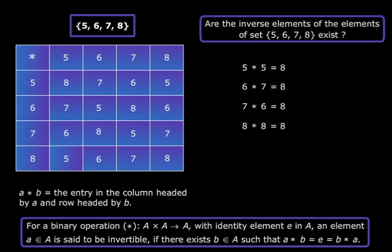So this implies that the inverses of all the elements of this set exist. And if you go back to the expressions again, you will see that the elements 5 and 8, they are inverses of themselves. The element 6, that is the inverse of the element 7. And the element 7, that is the inverse of element 6.